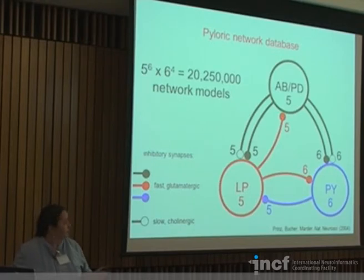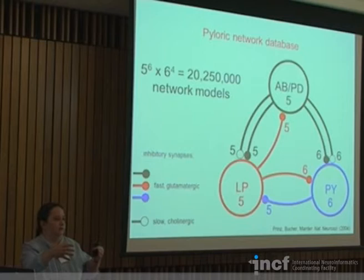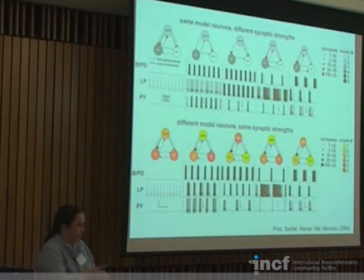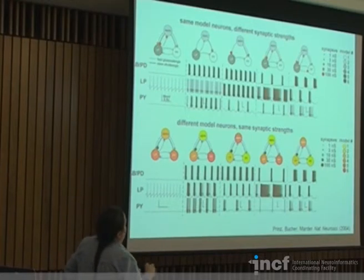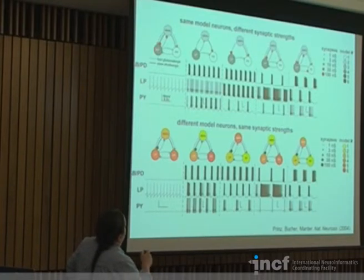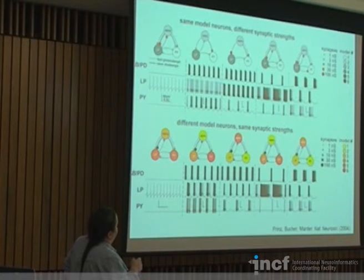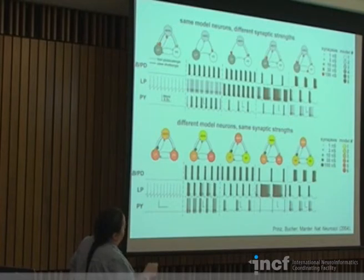The network database combines all of these: 20 million models. Everything is automated — detecting whether the network is rhythmically active, and if so, measuring period, burst durations, phase relationships, all dumped into a database. Here are ten examples of what can happen. In the top row, networks use the same model neurons but have different synaptic strengths. In the bottom row, same synaptic connectivity but different models in different positions.